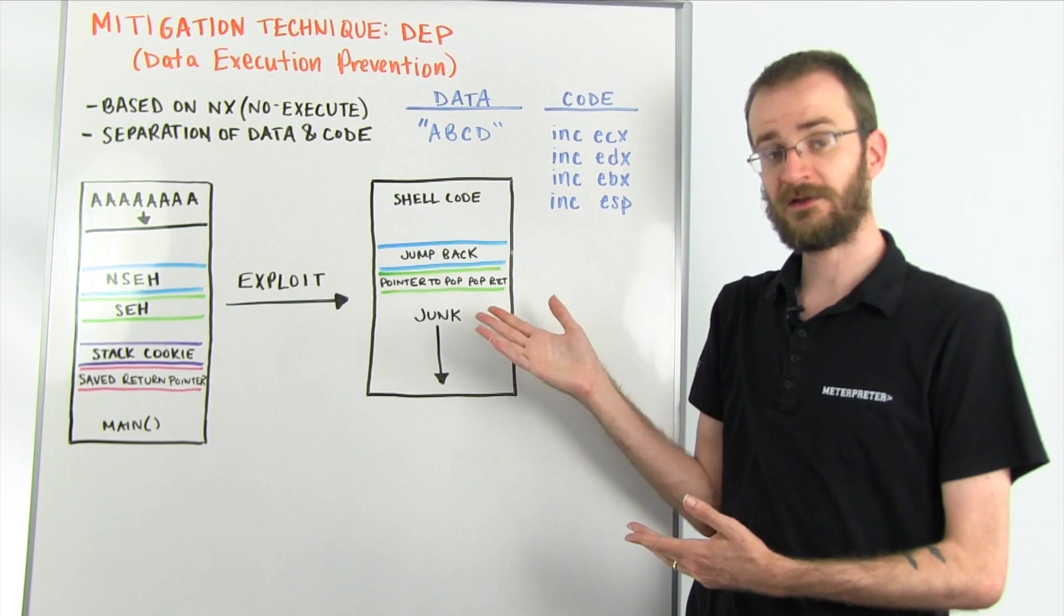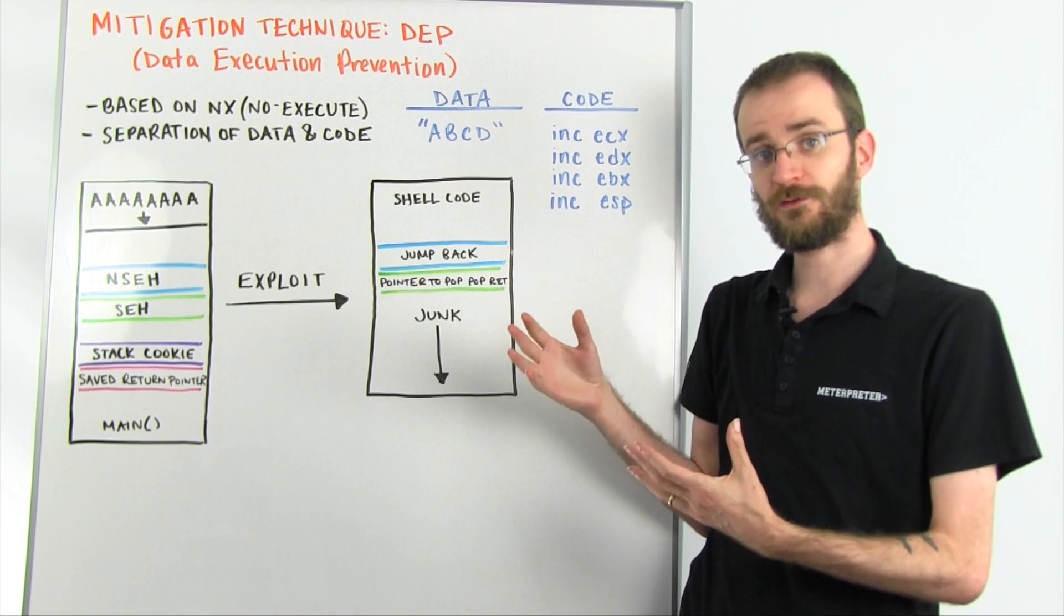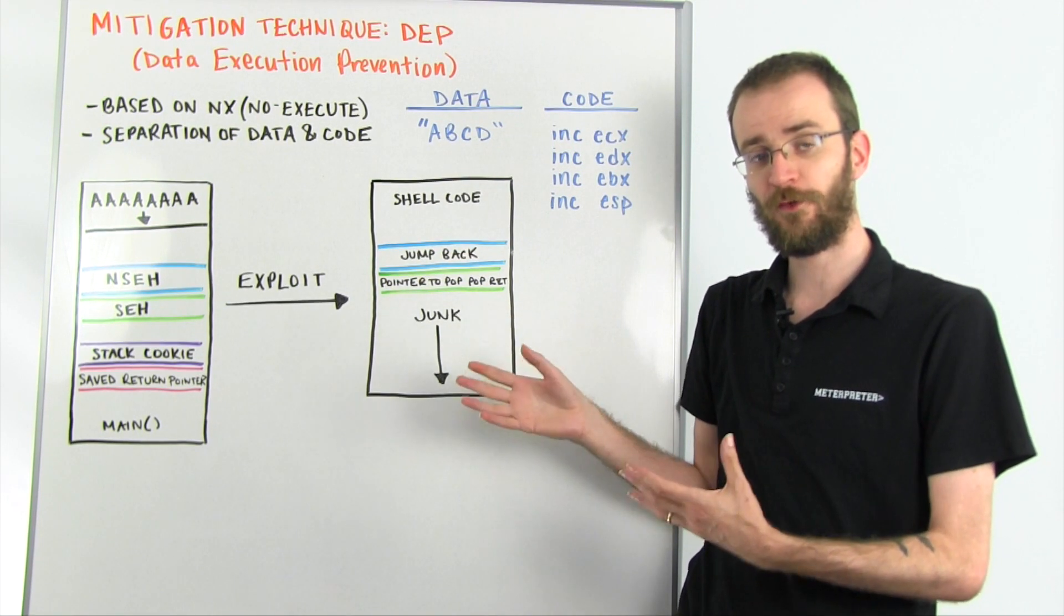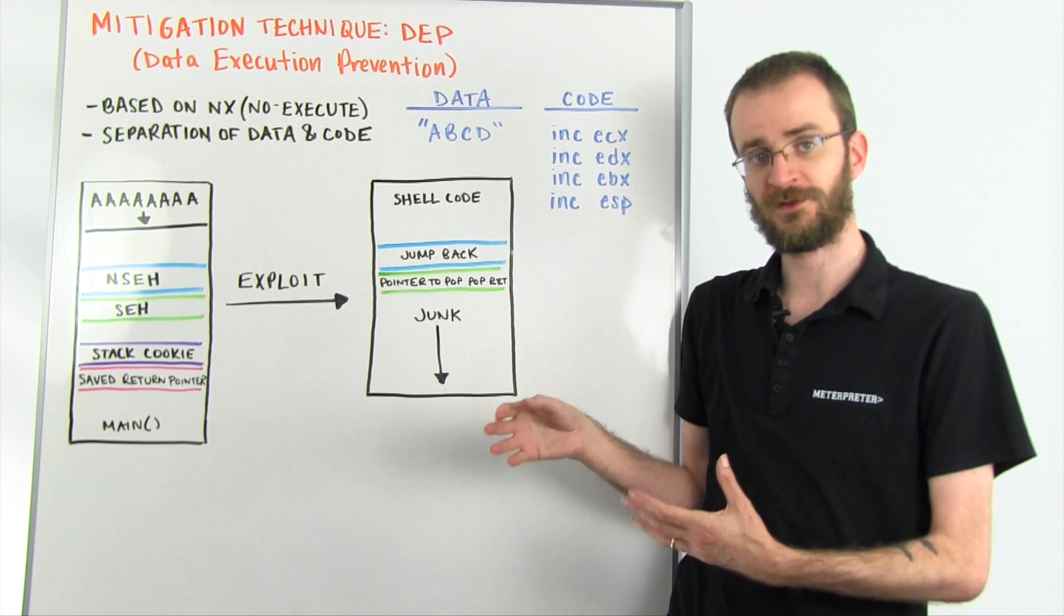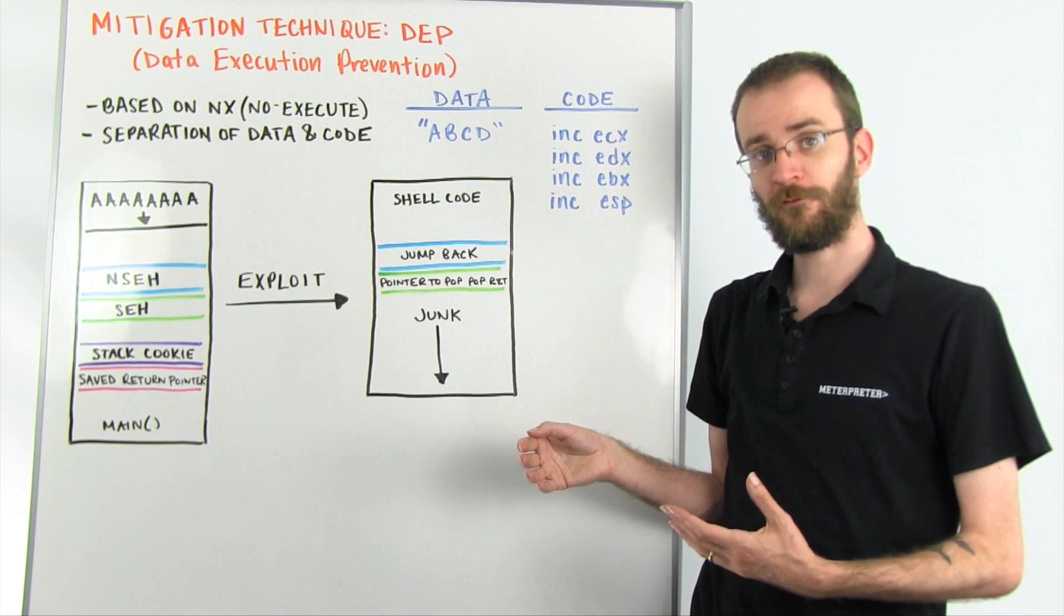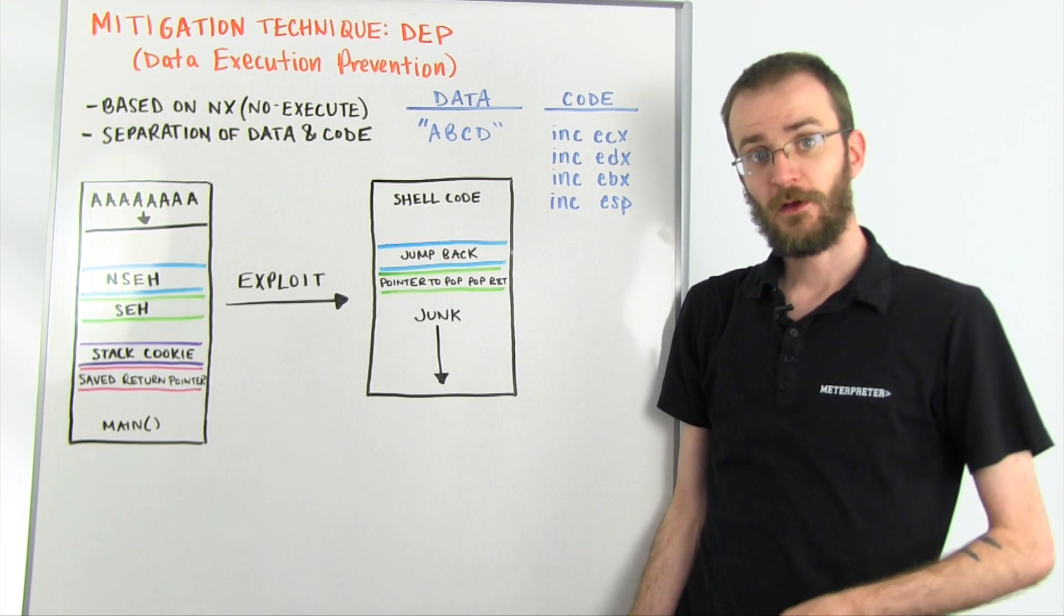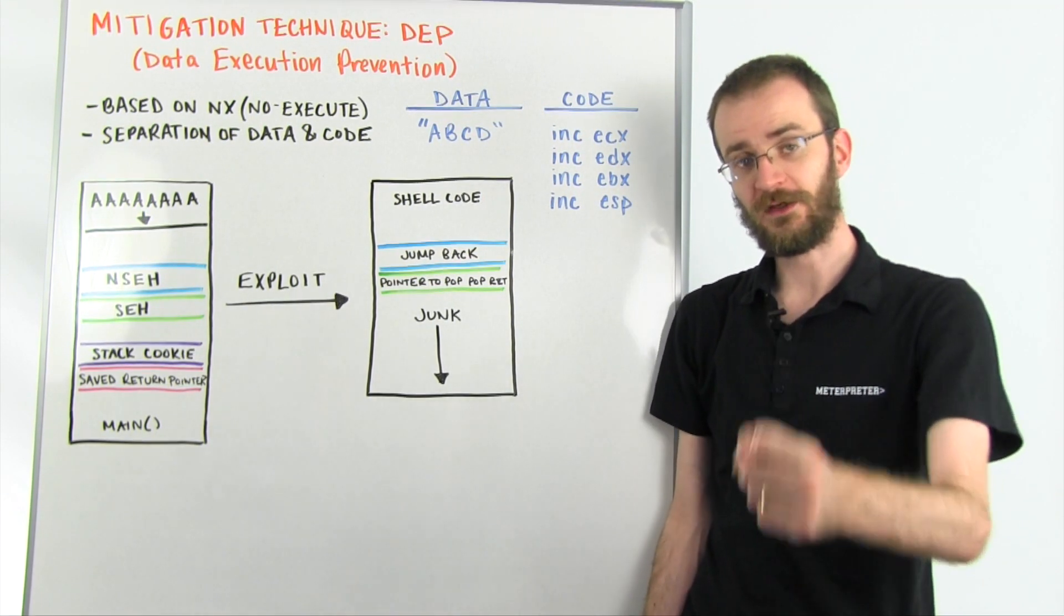This is how Data Execution Prevention, or DEP, prevents those same basic buffer overflow exploit techniques that we saw in some of the previous videos. Stay with us over the next couple weeks. We're going to also be talking about how you can bypass DEP. Thanks for joining us, and we'll see you next week.